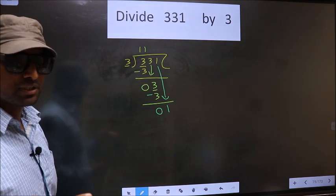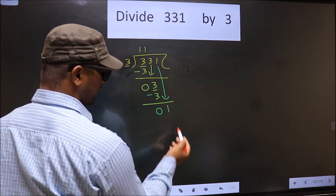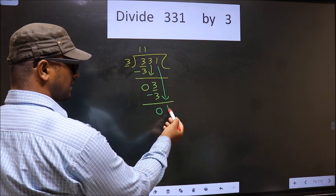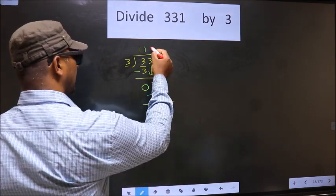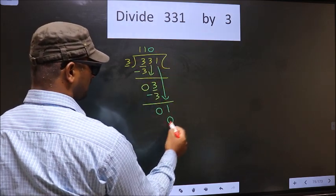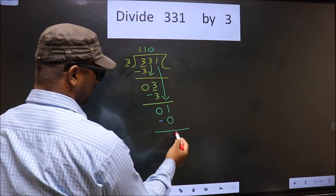Instead, what you should think of is what number should we write here. If we write 3 here, that is larger than 1. So what we do is we take 0 here. So 3 into 0 is 0. Now you subtract. 1 minus 0 is 1.